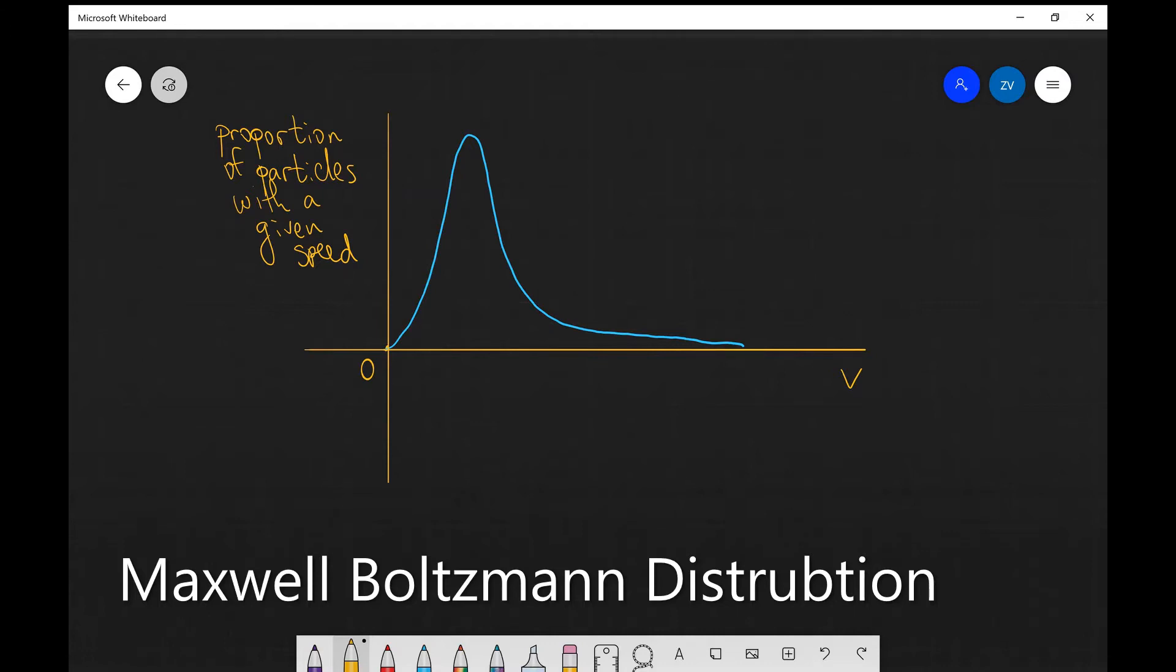In other words, you can think of the y-axis as the number of particles with a given speed. One of the things to notice is that we can split the graph into three different regions. For example, this first region over here is the particles which have quite a low speed.